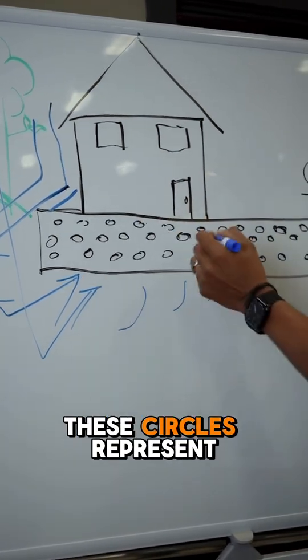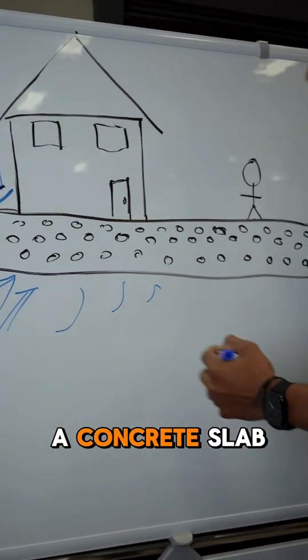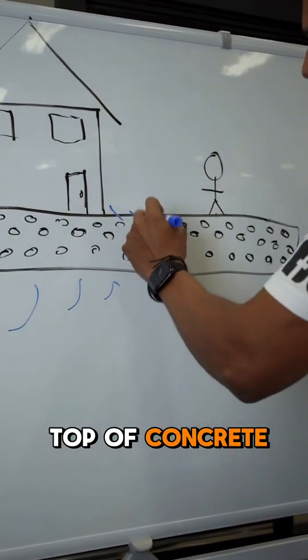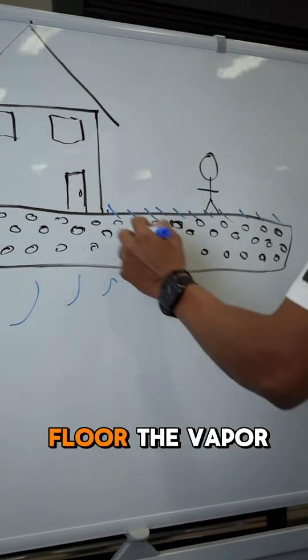What this is, these circles represent the pores of a concrete slab and this is somebody standing on top of concrete. We've done our grinding process. We've prepped the floor.